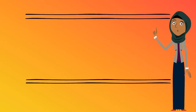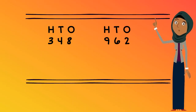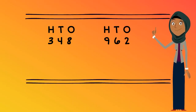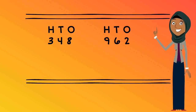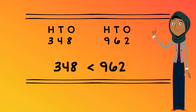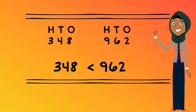Next, we compare the first digit on the left-hand side of each number to see whether it's smaller or bigger. In this case, we have a 3 and we have a 9. 3 is smaller than 9. So, number 348 is smaller than 962.